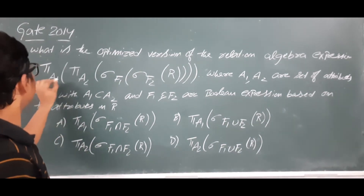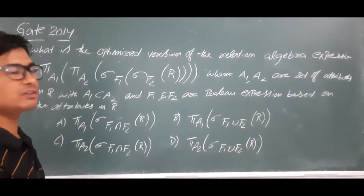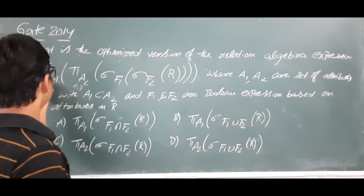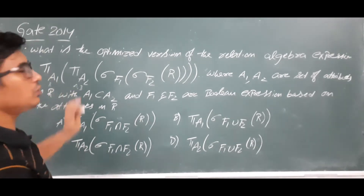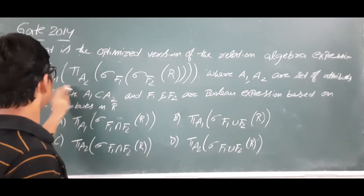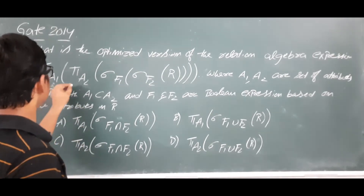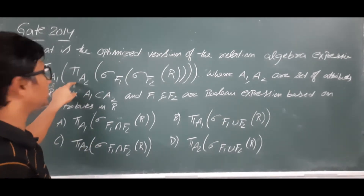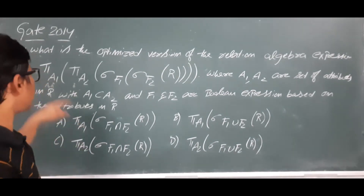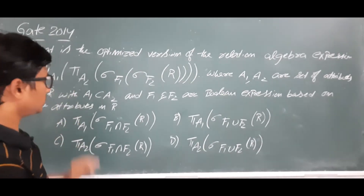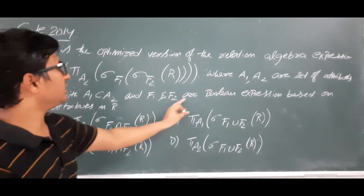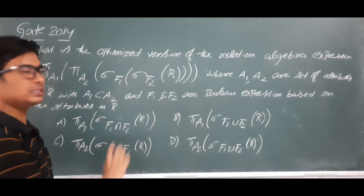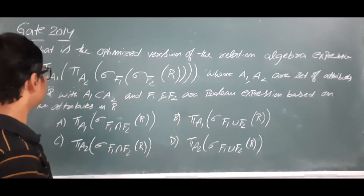The condition a1 ⊆ a2 means it is valid only if a1's attributes are also present in a2. For example, if you have attributes a and b in a2, you must have those attributes available; otherwise the expression is invalid. f1 and f2 are two boolean expressions — conditions applied using the selection operator on the relation.